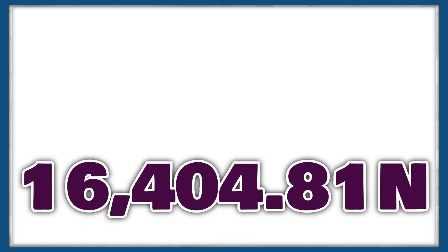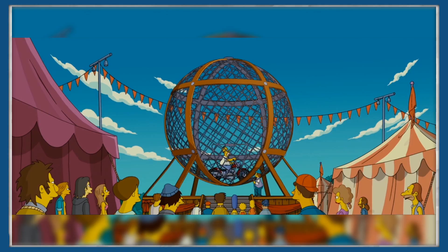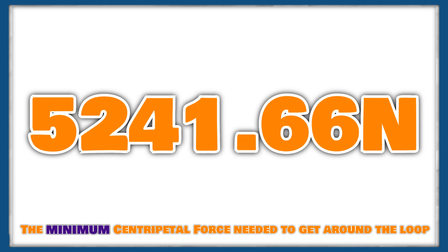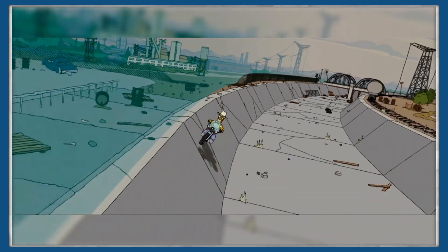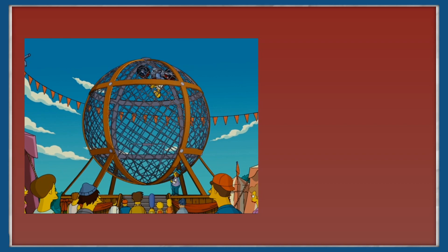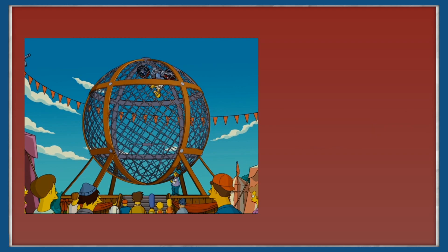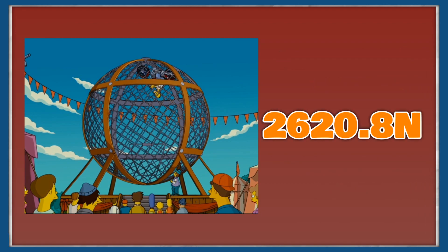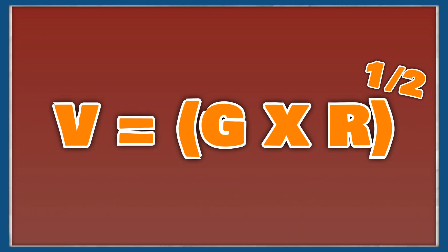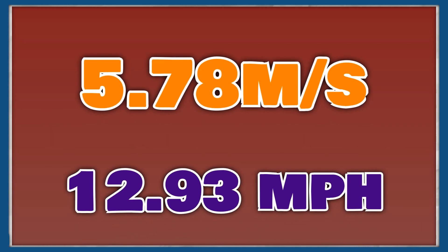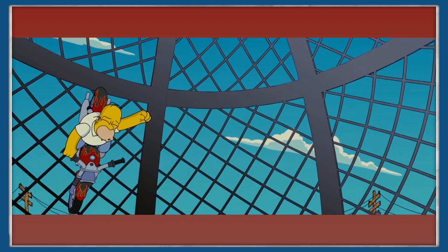That's significantly less than the 16,000 Newtons calculated previously, due to our high circular velocity. What we got from the normal and gravitational forces was the minimum value of the centripetal force, and using this we can find the minimum speed Homer and the bike would need to complete a full trip around a dome. The moment Homer slows down enough at the top that he falls, the normal force reduces to zero, meaning the centripetal force equals the gravitational force of 2620.83 Newtons. Rearranging the equations gives us: velocity equals the square root of the gravitational constant multiplied by the radius of the sphere. Plugging in our numbers gives a minimum velocity of 5.78 meters per second, or 12.93 miles per hour — any faster than that and Homer would easily make it around the dome.